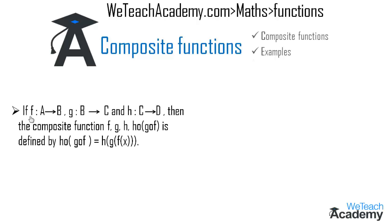If f is a function from A to B, g is a function from B to C, and h is a function from C to D, then the composite function h circle g circle f is defined by h circle g circle f of x equal to h of g of f of x.